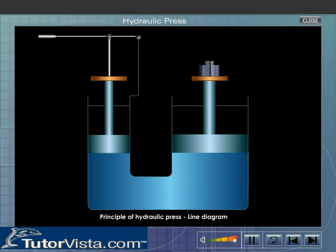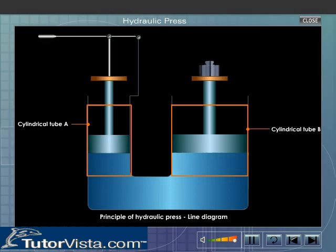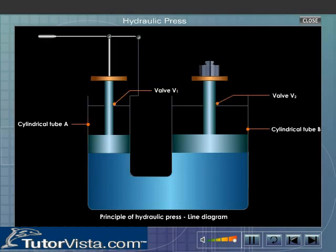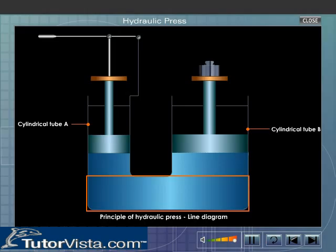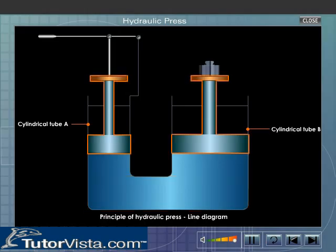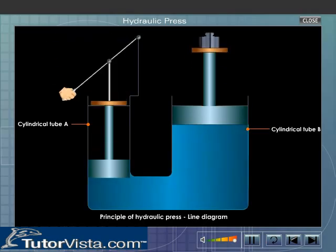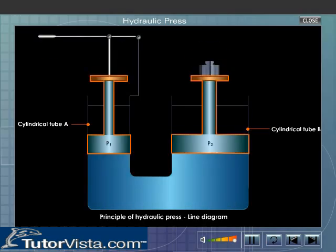In a hydraulic press, there are two cylindrical tubes A and B of unequal area of cross sections fitted with valves V1 and V2. These cylindrical tubes are connected at the bottom by means of a horizontal tube, and they contain watertight pistons P1 and P2 which can slide up or down within the cylinder.